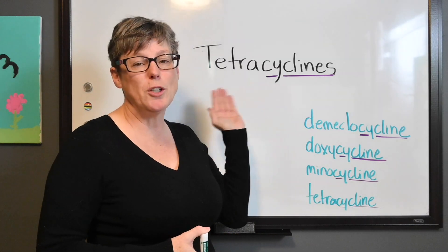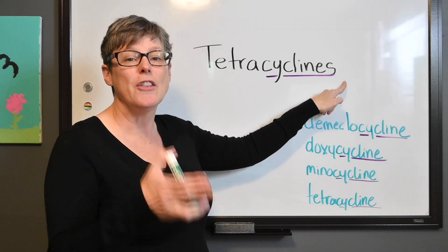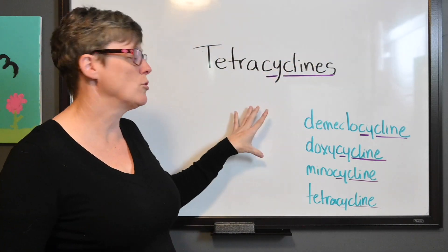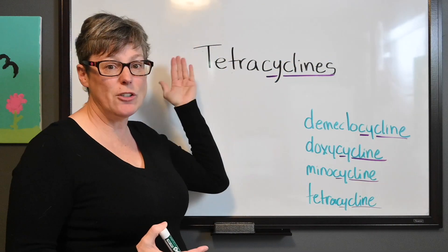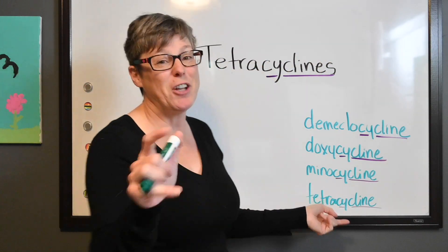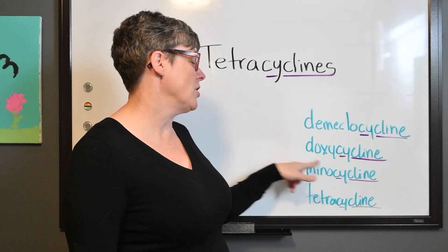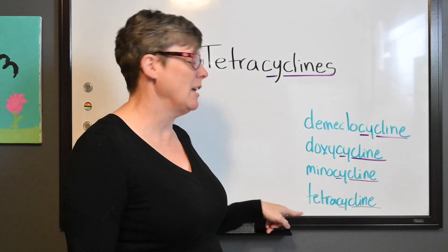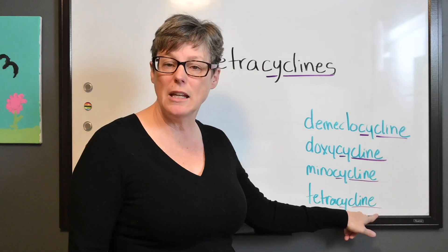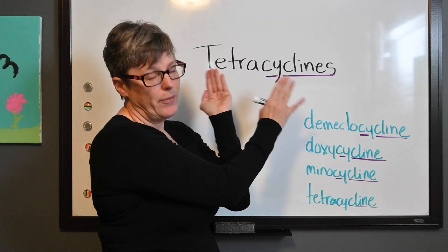What you might notice right away is that '-cycline' is the ending you will also see in generic drug names. Remember, classification drug names — and tetracycline is both a classification and a drug name, that's a fun fact. Examples include meclocycline, doxycycline, minocycline, and tetracycline. When you see this ending in a generic drug name you can automatically associate it with the tetracyclines classification.